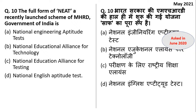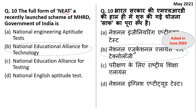This question was asked in the NET examination in June 2020. The full form of NEAT — a recently launched scheme of MHRD, Government of India — is National Educational Alliance for Technology. Don't get confused: if an option mentions something unrelated like Swachh Bharat, don't mark that. Alliance means when two groups come together and form a group. The right answer is option B.